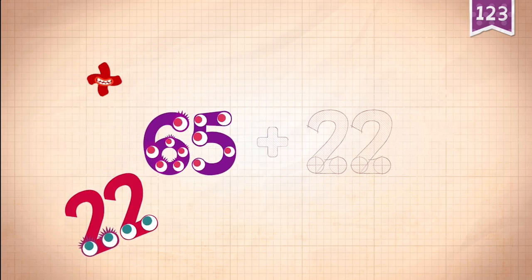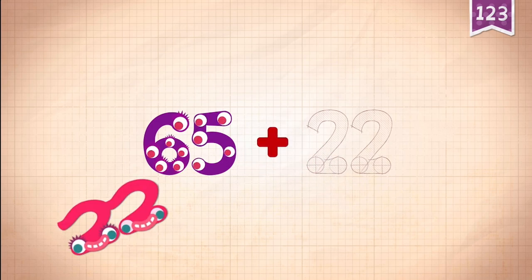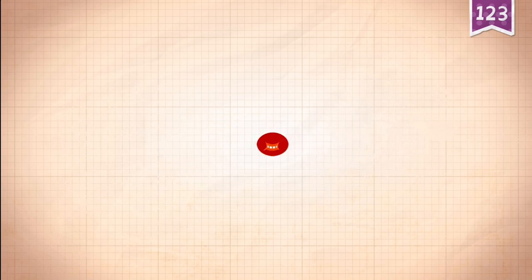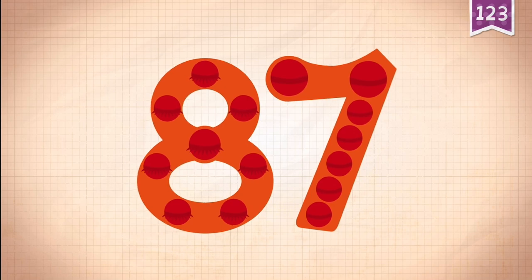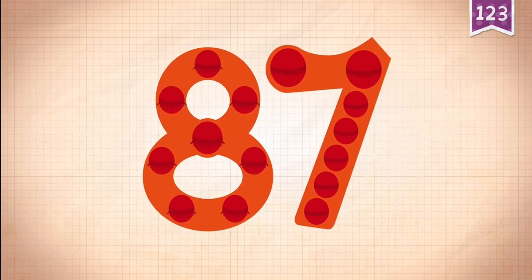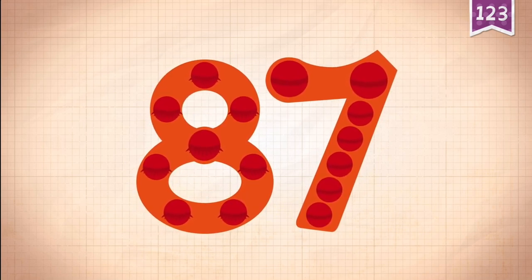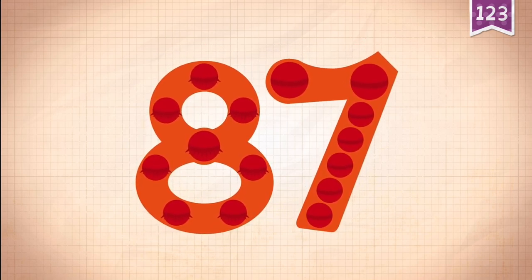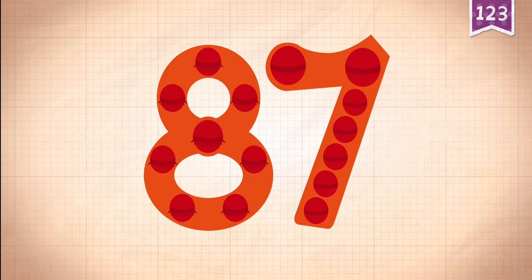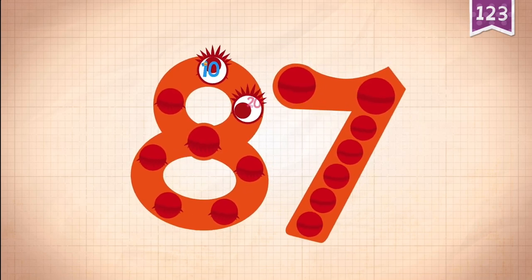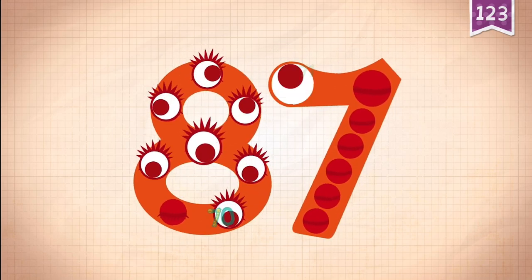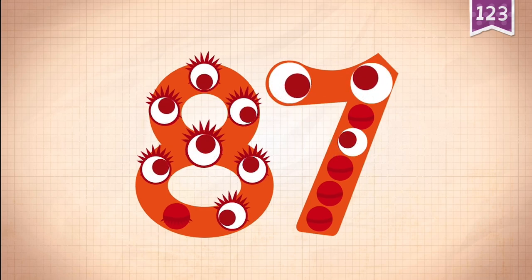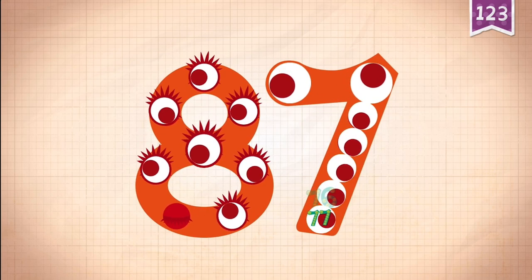65 plus 22 equals 87. Touch the monster's eyes to wake it up. 10, 20, 30, 40, 50, 60, 70, 71, 72, 74, 75, 76.